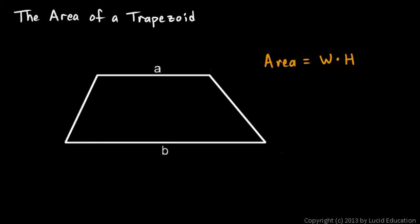So the question is, what would we put in here for width? If we're going to do width times height to find the area of this shape, what is the width of this shape? Well, it turns out it's the average width of these two bases.